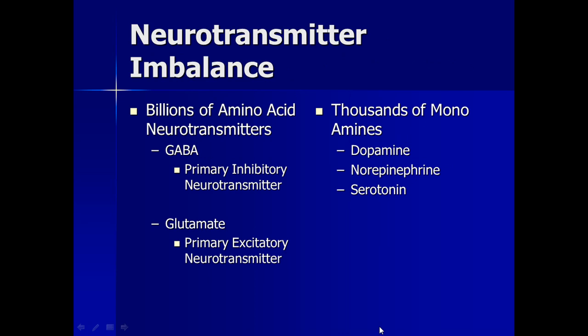The neurotransmitters need to be in the correct balance. We have billions of amino acid neurotransmitters and thousands of monoamines, and this balance must be maintained. If not, then we could have symptoms of a psychiatric disorder. It's important to know how these neurotransmitters work, which we'll be learning this week.